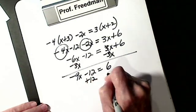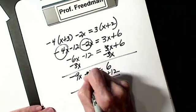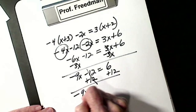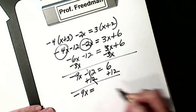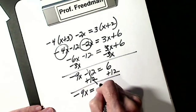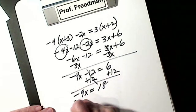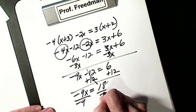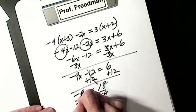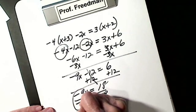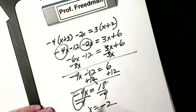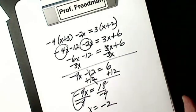So I'm going to add 12. I have minus 9X equals 18. Then divide by the coefficient of X — make sure it's exactly the same because I want a positive X — equals negative 2.